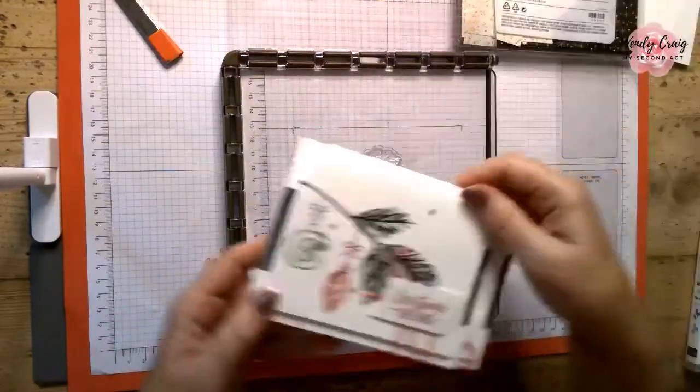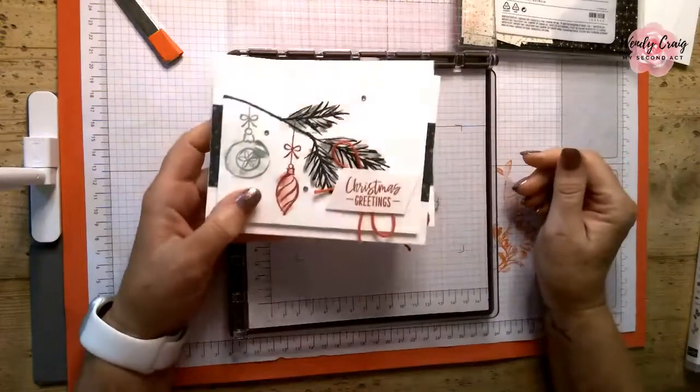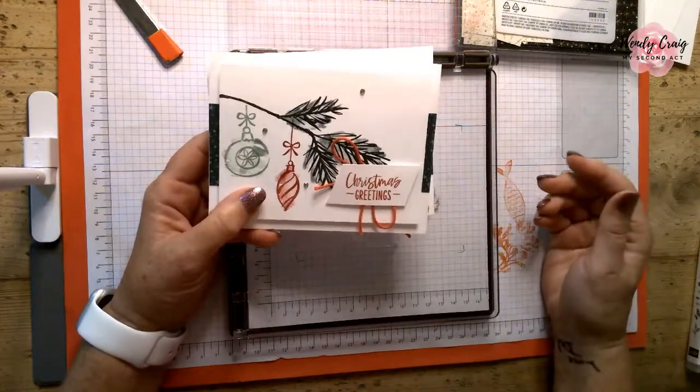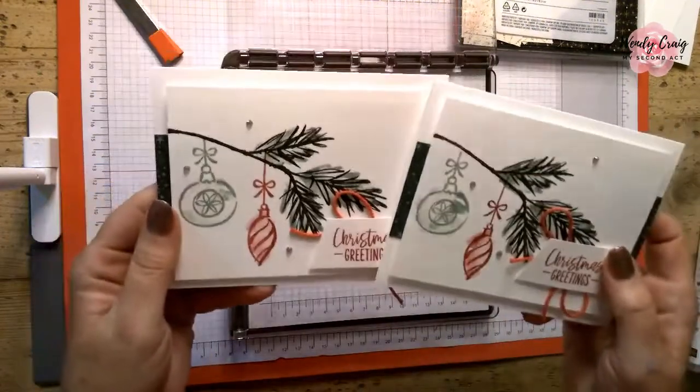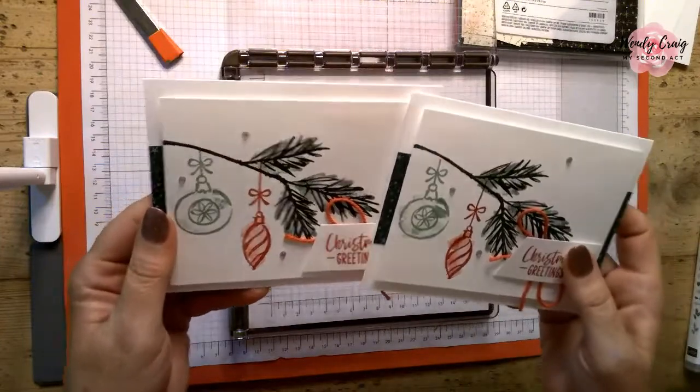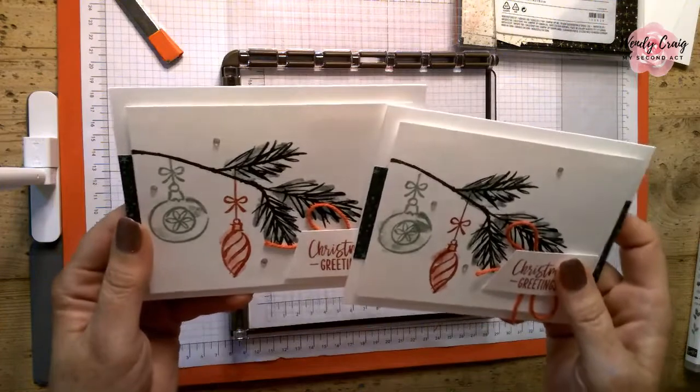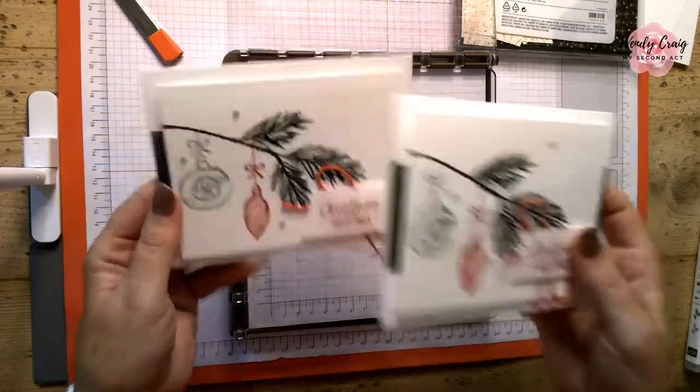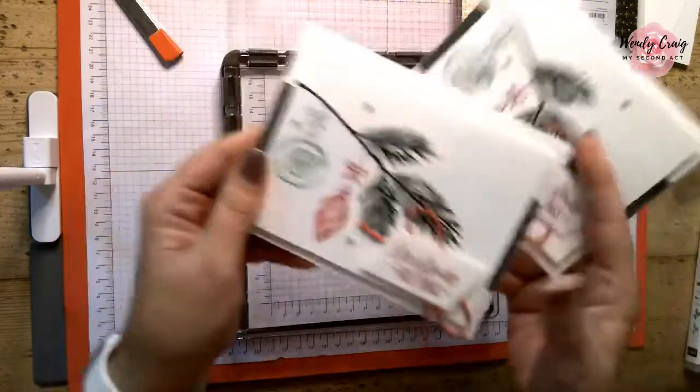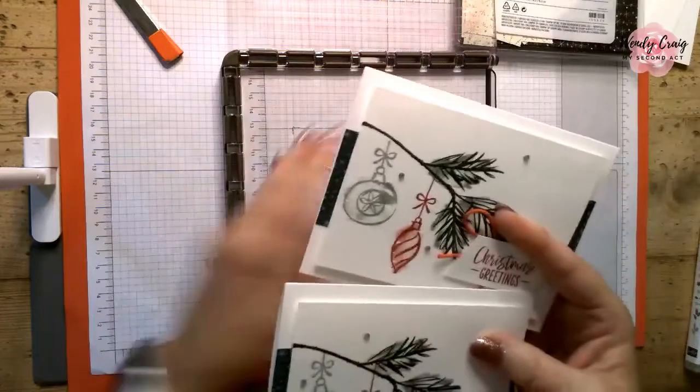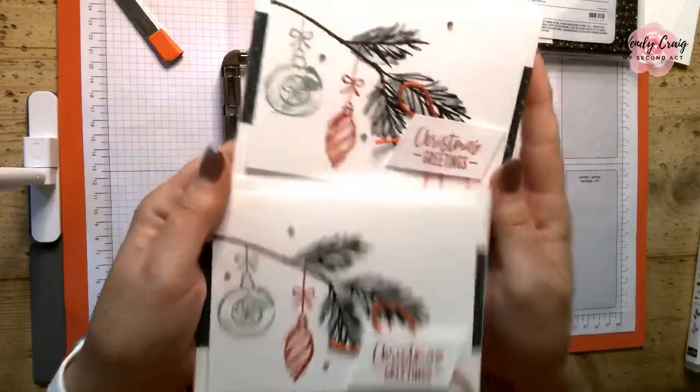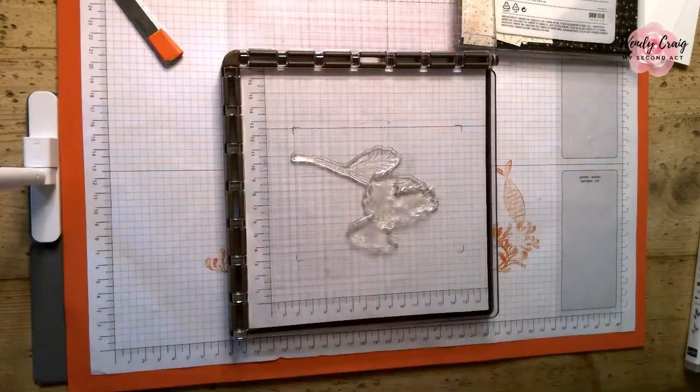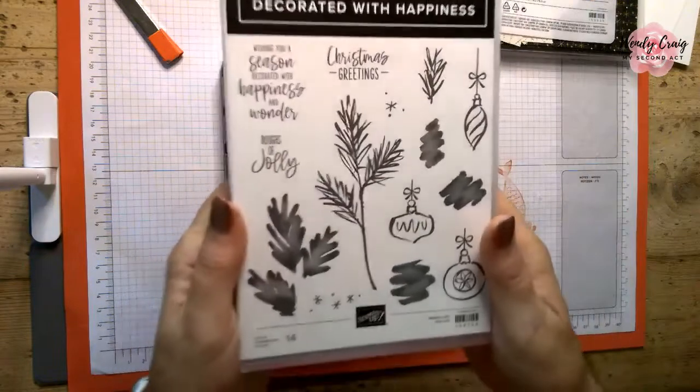Now the cards we're making today are some Christmas cards. I don't know about you, but I'm starting to get a little panicky about the Christmas season and getting all my cards done and all my crafts done. This is a super easy way. These were done with the Stamparatus and I have the Stamparatus all set up. I could make a whole bunch of these quickly. Look at how quickly you could make a bunch of cards.